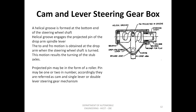Cam and lever type steering: A helical groove is formed at the bottom end of the steering wheel shaft. The cam is mounted at the lower end of the steering shaft and is a variable-pitch worm. Ball bearings support the cam. A twin lever carrying a stud meshes in the groove of the cam, providing minimum friction when contact is made between the cam and the stud. When the cam turns, the stud moves in an arc, making the pitman arm shaft and pitman arm rock. Steering is achieved by the rocking movement of the drop arm. The cam is cylindrical in shape and provides non-reversibility at the centre parts.